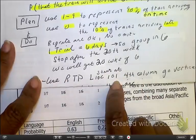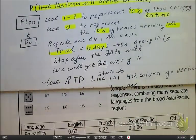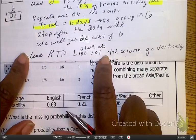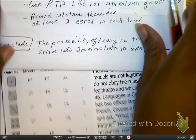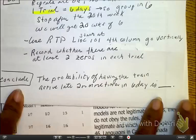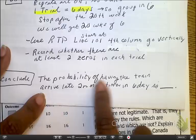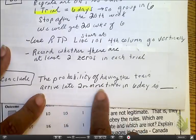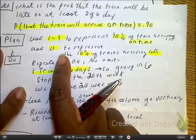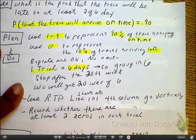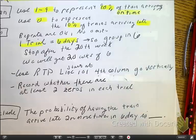We're going to use the random digit table. And we're going to use the same random digit table we just used. However, I'm going to use it differently. We're going to start at one zero. We're going to be using the fourth column. We're going to go vertically again. And the reason we're going to go vertically, you're going to see. We're going to record whether there are at least two zeros in each trial. And then we're going to have the probability that the train arrives late two or more times. So remember, we're able to use one-digit numbers. So we're looking in each group of six to see if we're going to have more than one zero in that group.